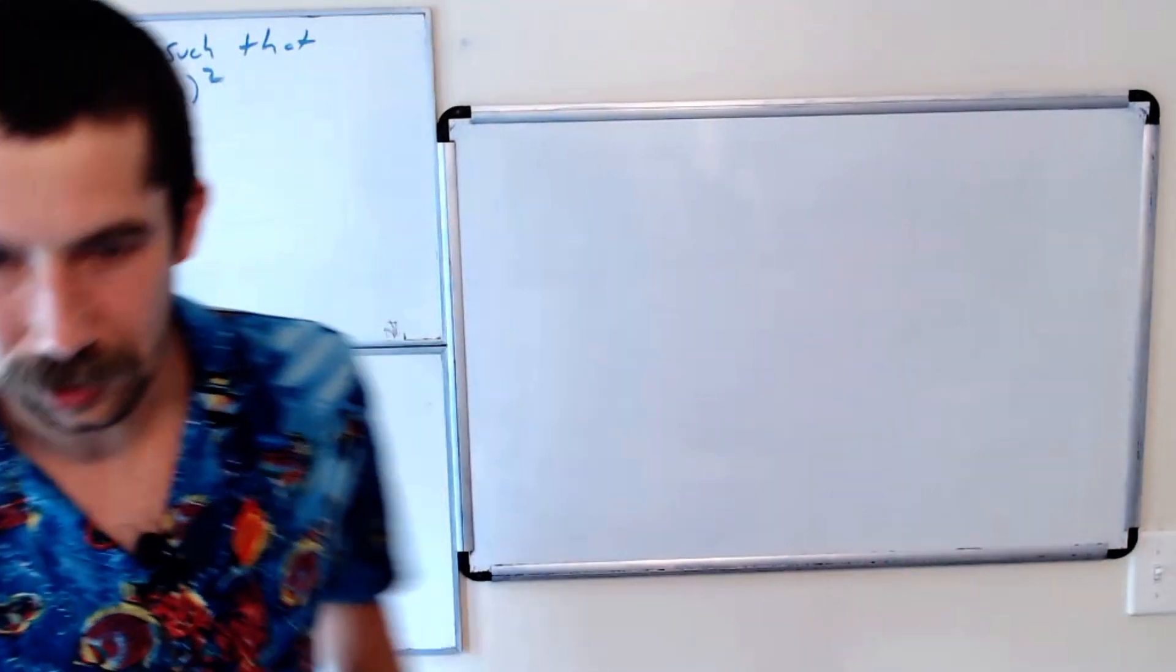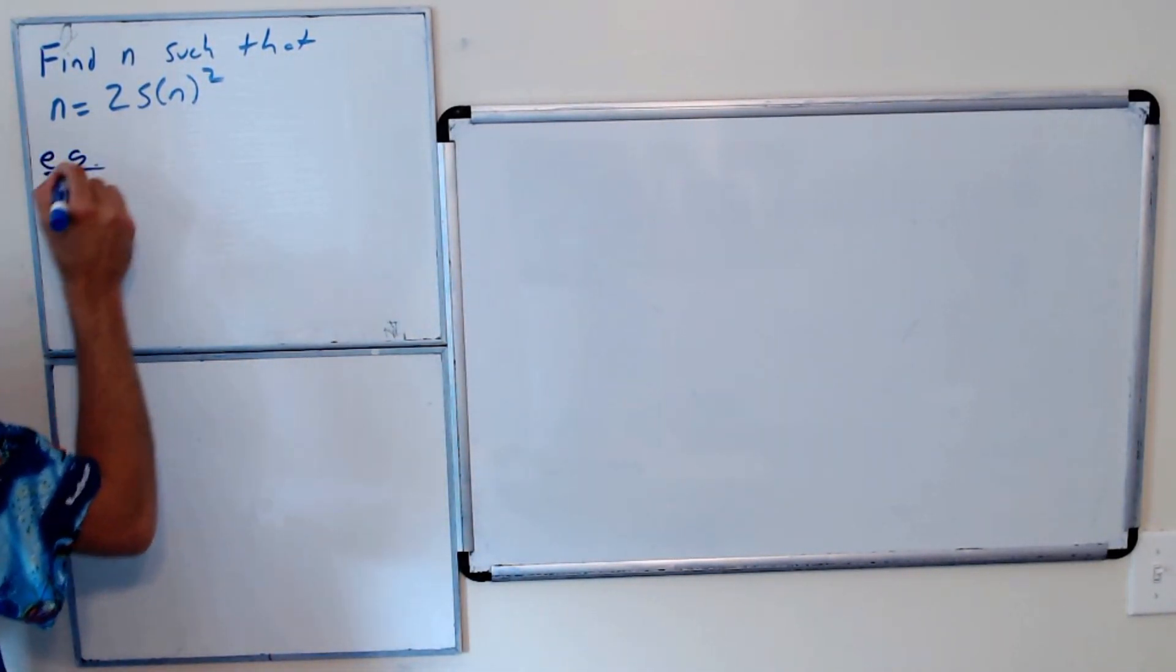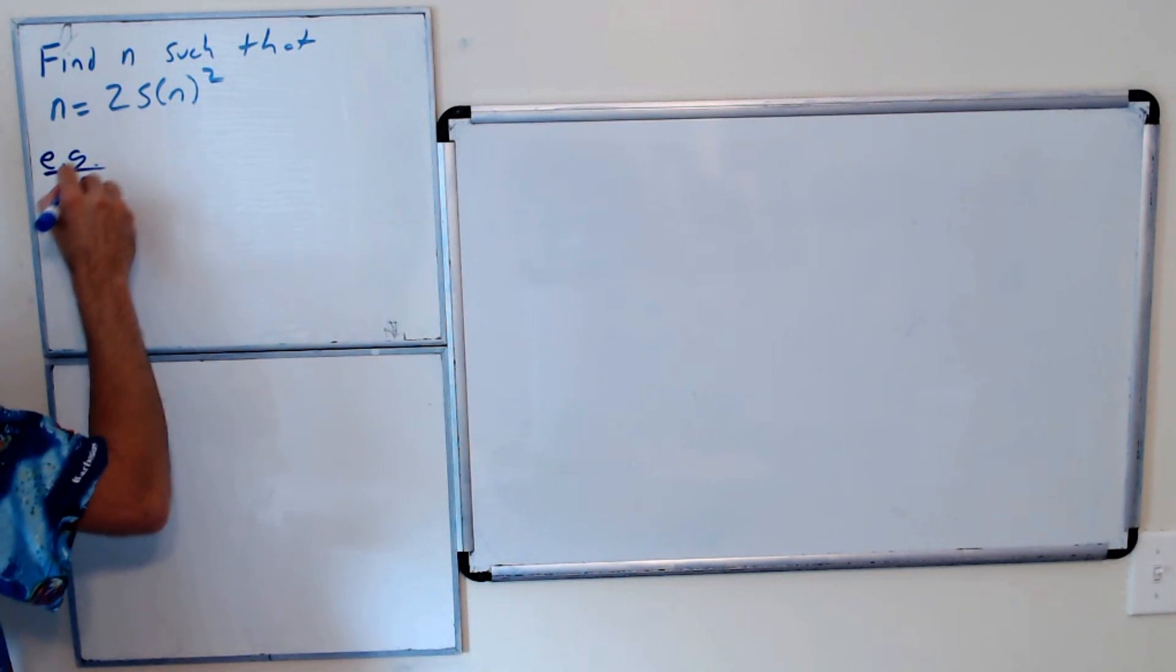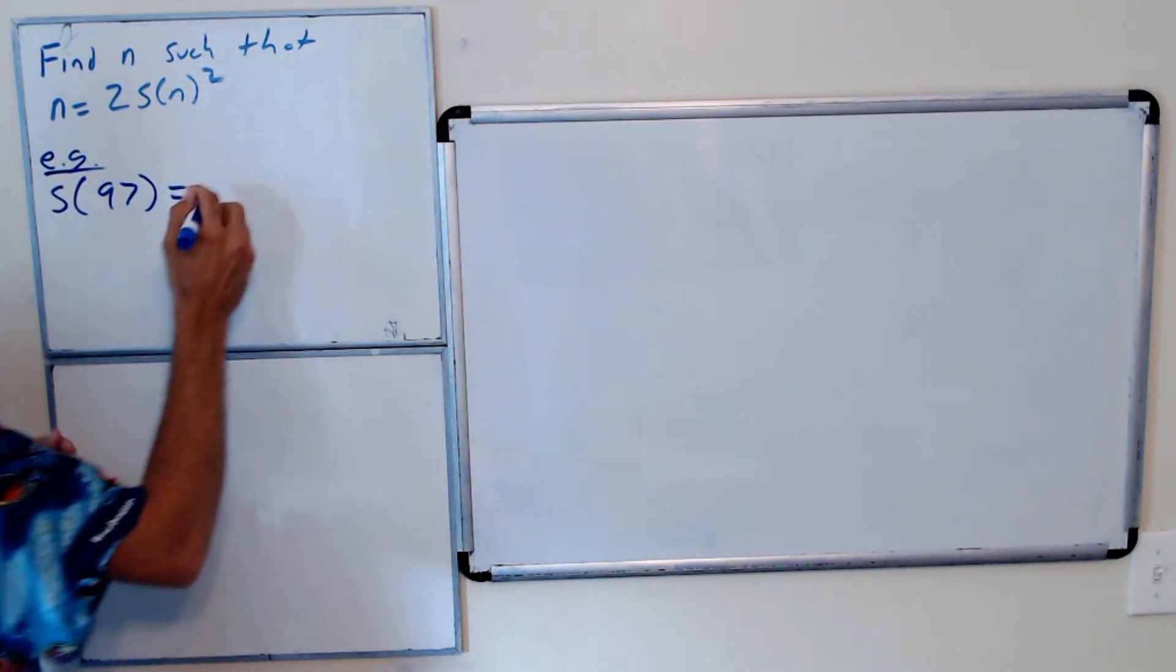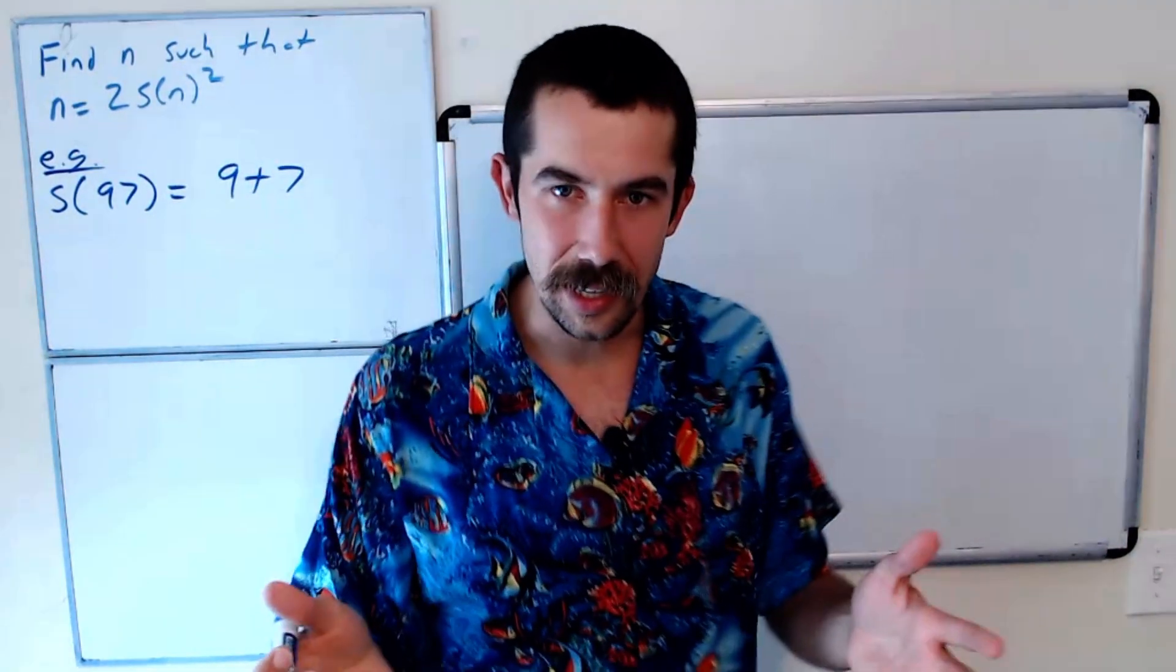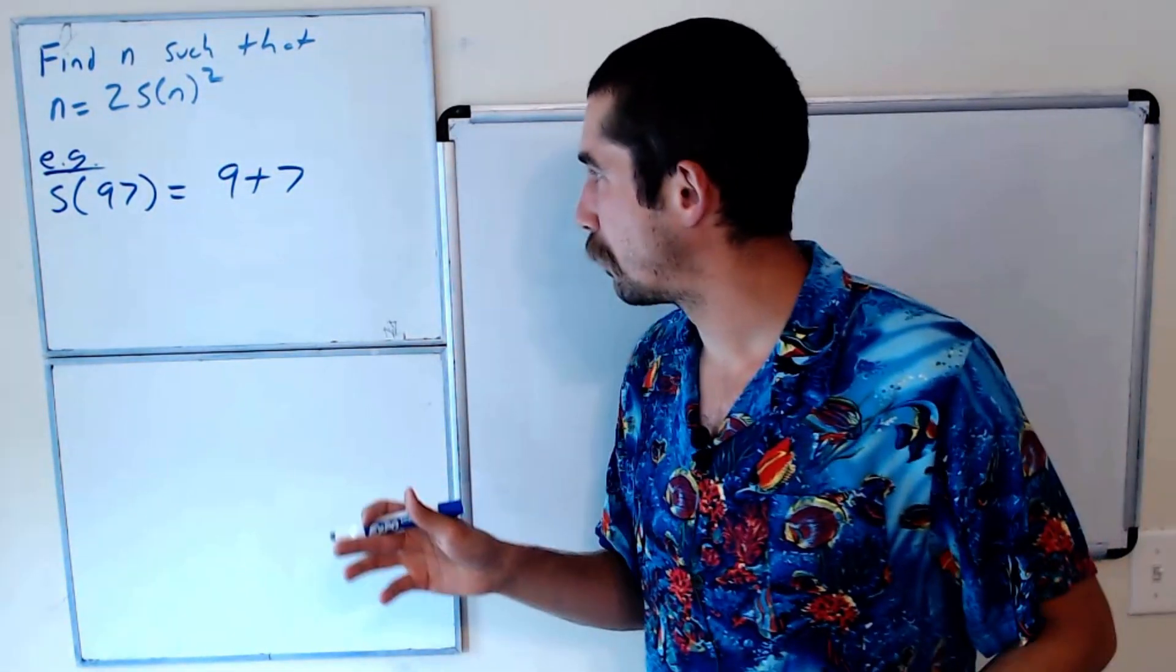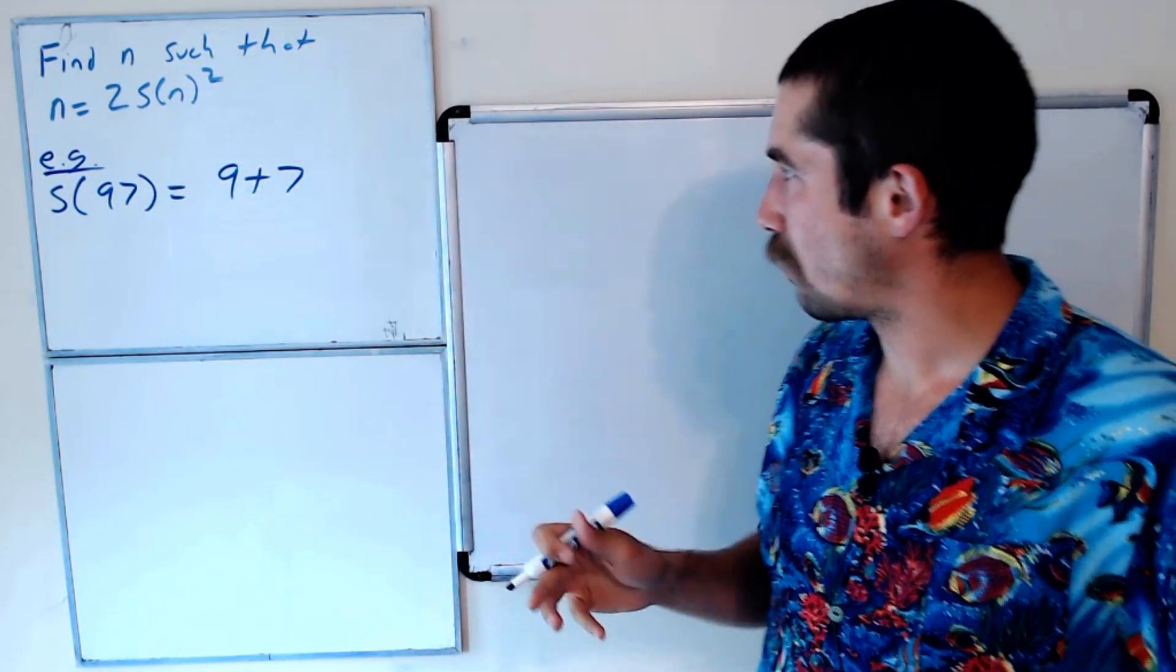Just so we're familiar with this notation, S of, let's say, 97. So that would be 9 plus 7. The way this works is you find the digits base 10 and you add them up. So the sum of the digits of 97 is 9 plus 7, which is 16.